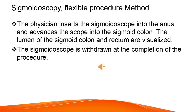Sigmoidoscopy, flexible procedure method: the physician inserts the sigmoidoscope into the anus and advances the scope into the sigmoid colon. The lumen of the sigmoid colon and rectum are visualized. The sigmoidoscope is withdrawn at the completion of the procedure.